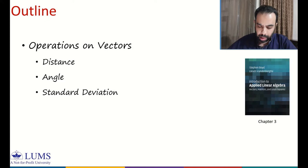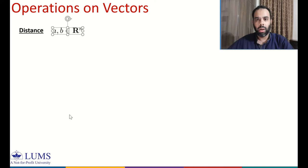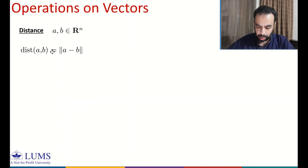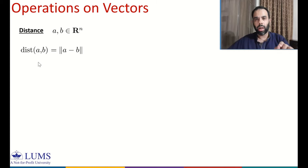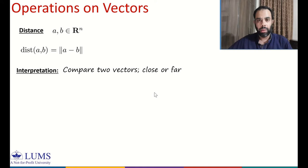Let's start with distance. We are interested in finding the distance between two vectors in the gradient space. Say we take two vectors A and B in R^n, and we are interested in finding the distance from vector A to B or from vector B to A. We use this notation to denote distance. The distance between vector A and B is given by the norm of A minus B. We compute distance to compare two vectors, or to find out whether vectors are close to each other or far from each other.